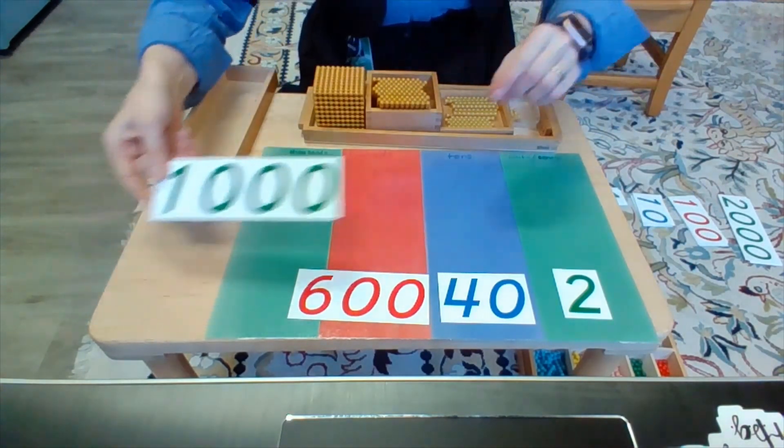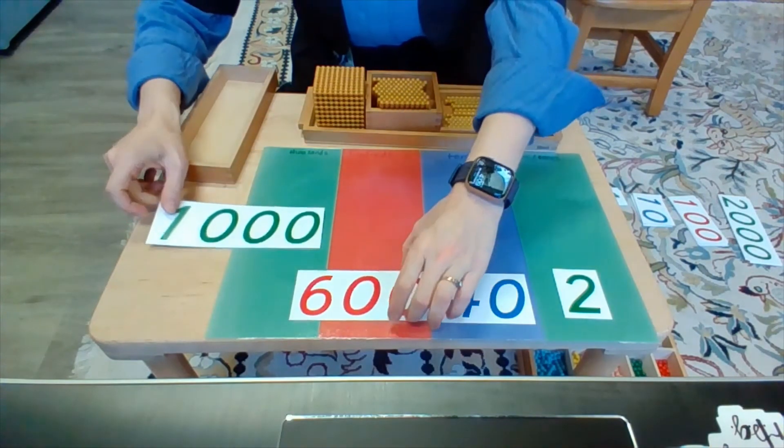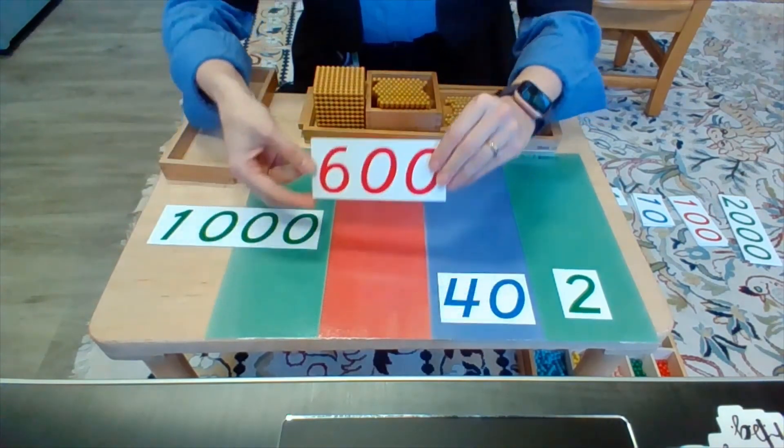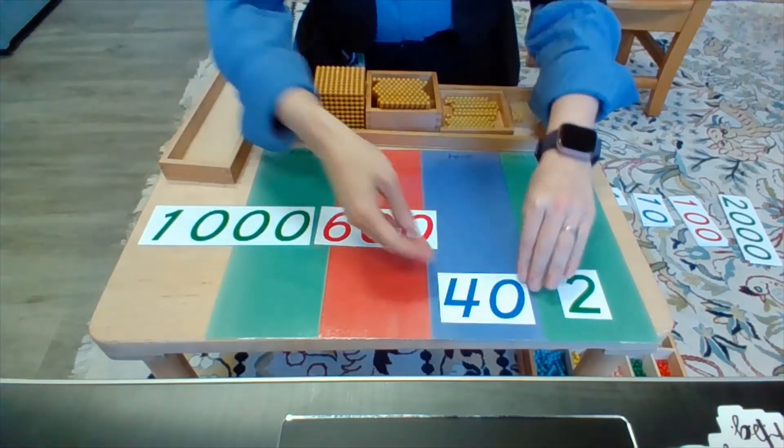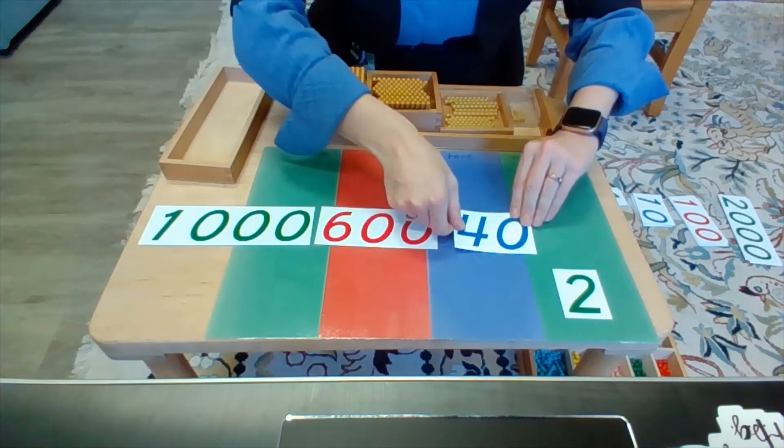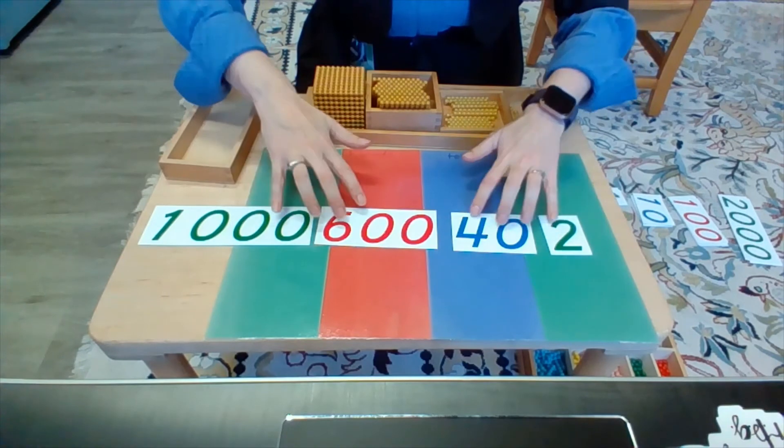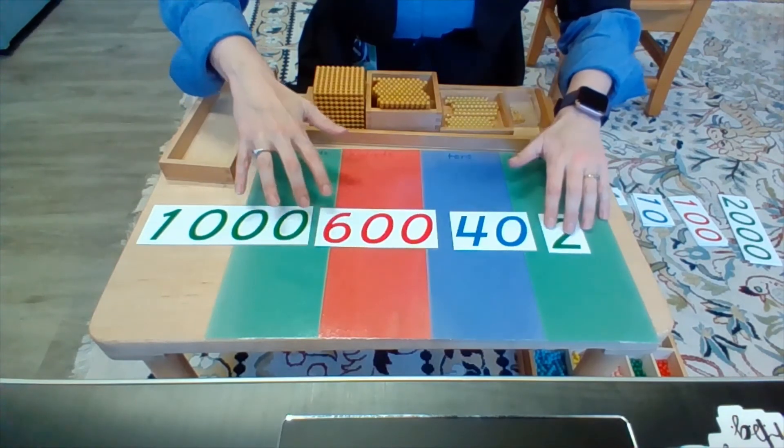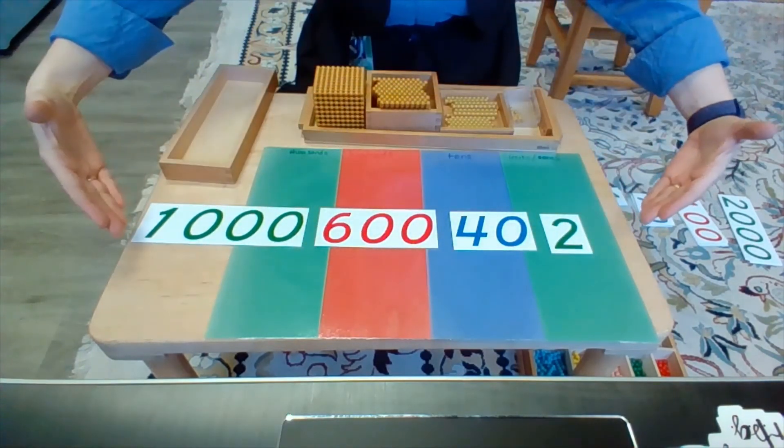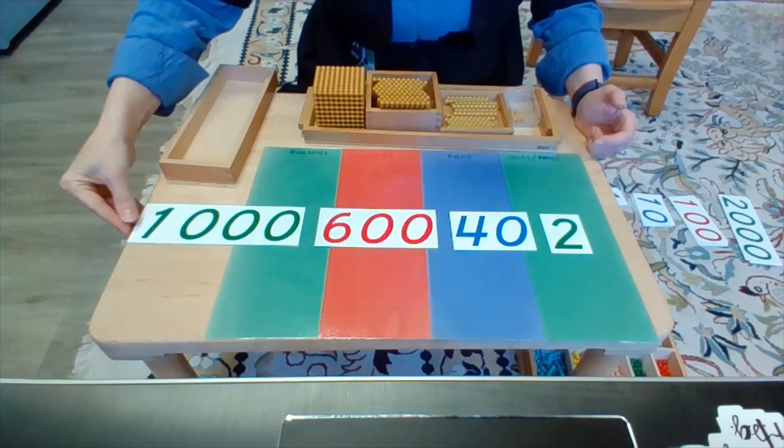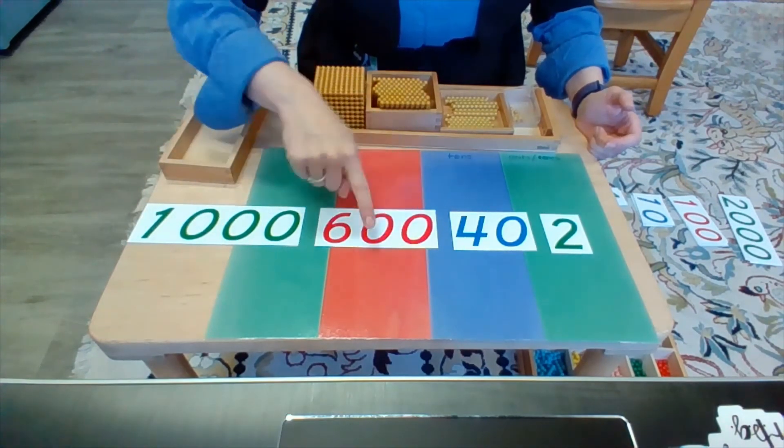And this number is made of 1,000 plus 600 plus 40 plus 2. So when it is in expanded form, I have expanded the numbers so that you see each place value with all of its zeros.